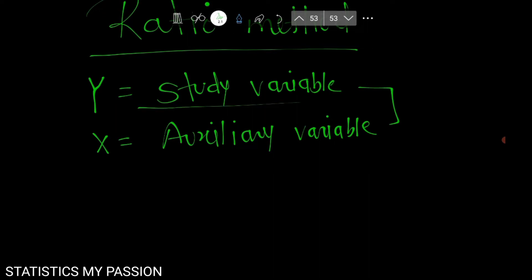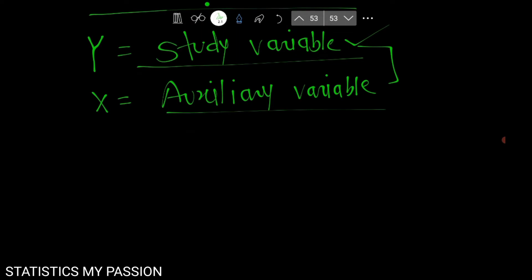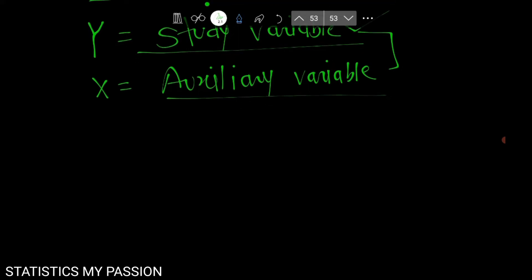So both are different. What is the study variable and what is the auxiliary variable? The study variable is the one being studied in our project. The auxiliary variable is one which is already known in advance from some earlier completed census or earlier survey. The knowledge of these variables is already known, and we can get this knowledge from a completed census or from an auxiliary survey.